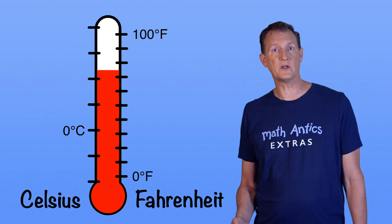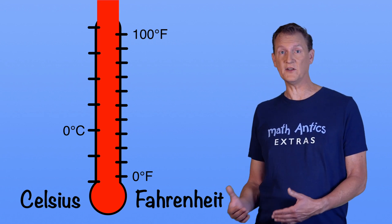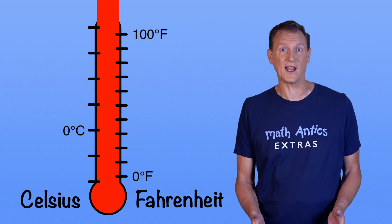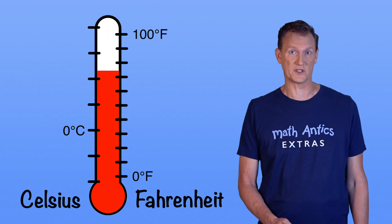So while 74 degrees Fahrenheit is a nice temperature for most people, 74 degrees Celsius is so hot you would die! And so it is really important to know how to convert a temperature from one scale to the other scale.